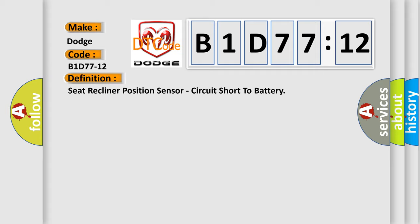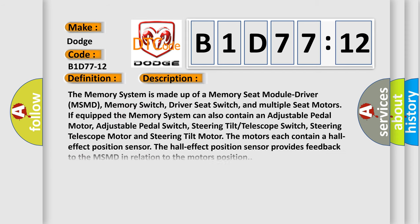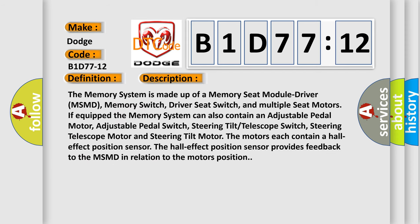And now this is a short description of this DTC code. The memory system is made up of a memory seat module driver (MSMD), memory switch, driver seat switch, and multiple seat motors.